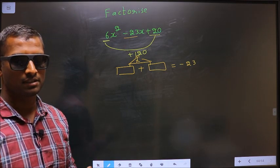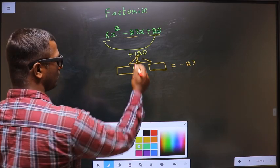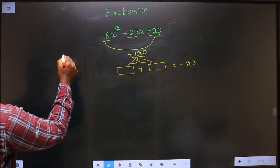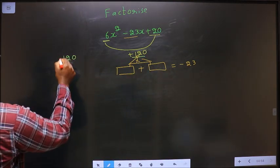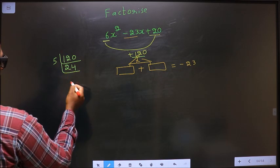Now, to get those two numbers, we have to take LCM of 120. Starting with 5. 5 twos, 5 fours, 20.